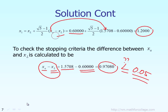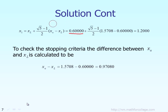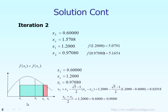That is the golden section method as covered up to now. Now let's see what happens if we do more iterations. In iteration 2, you have the new lower bound and upper bound: 0.6 and 1.5708. Based on that, you calculate the two interior points x1 and x2. But remember, out of those two points, one of them you already have from the previous iteration, so you only need to calculate one new point.